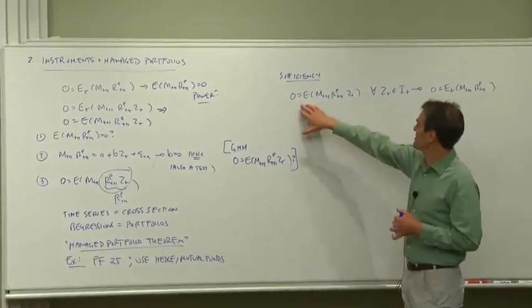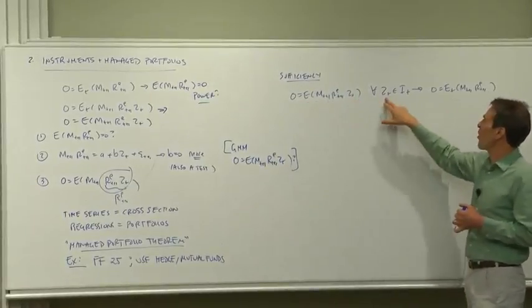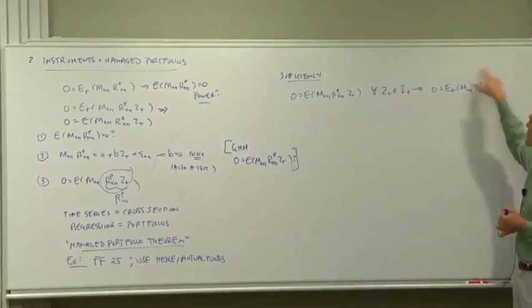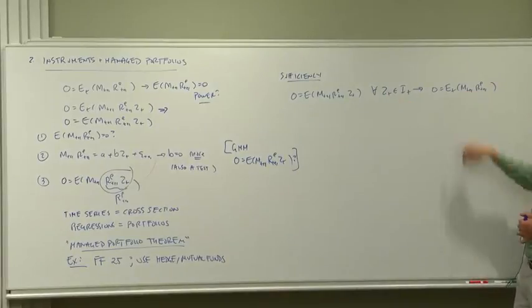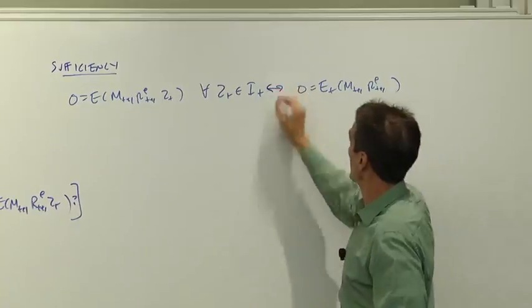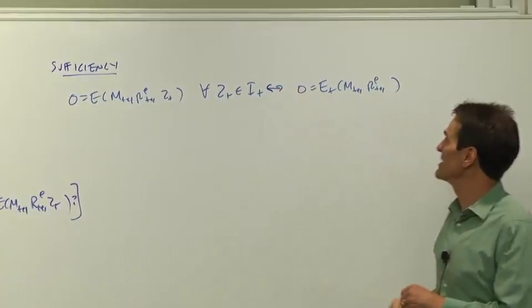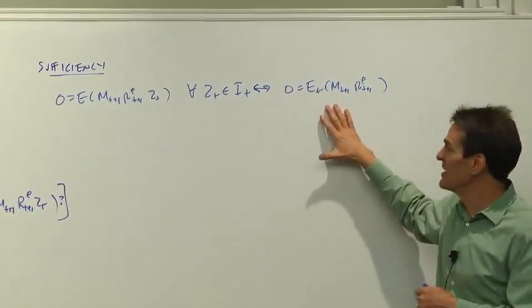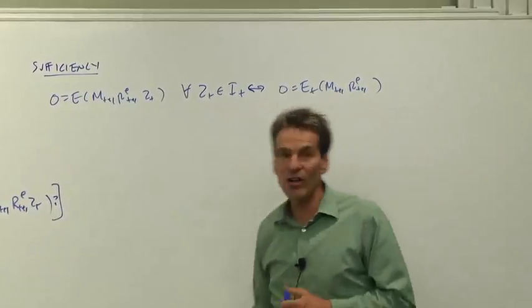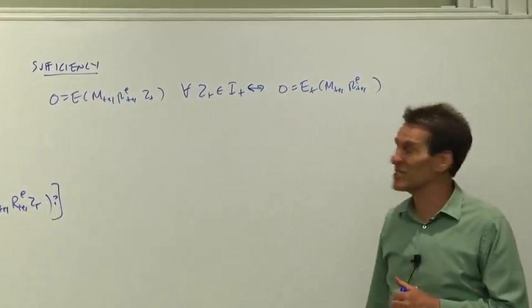Well, here's a theorem. If 0 equals E(MR times Z) for all Z in an information set, then in fact we can say the conditional mean 0, E(MR), is 0. In other words, the definition of conditional mean is the same thing as all linear and nonlinear regressions put together.